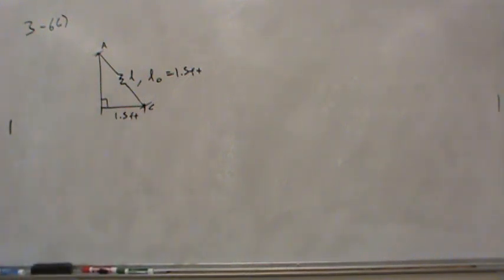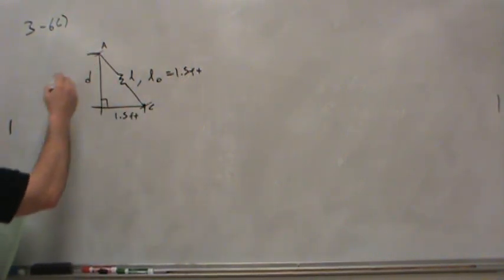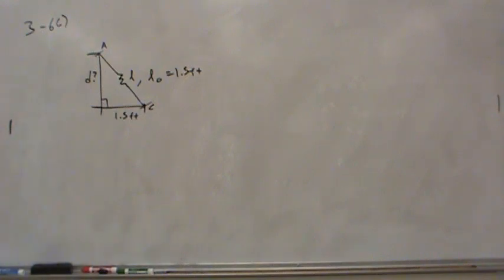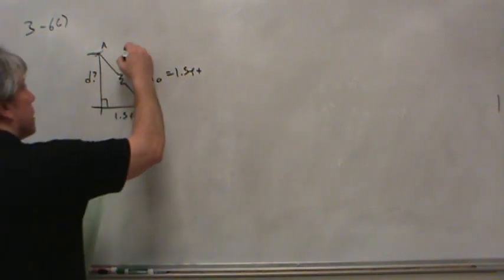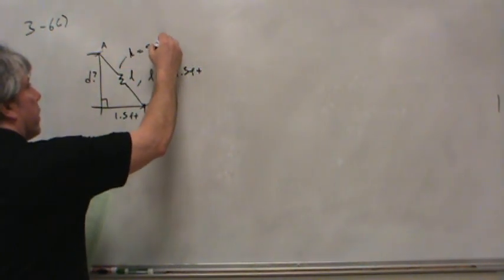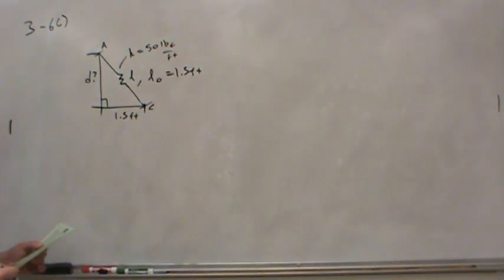The distance from the rim to point A — that horizontal extent — is 1.5 feet. What they really want us to find is this height D. That's the unknown we've come to find. The spring constant K is 50 pounds force per foot as we read in the text.